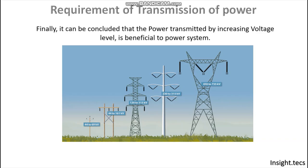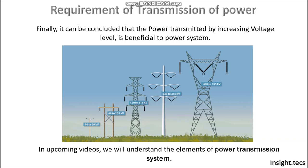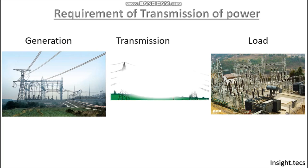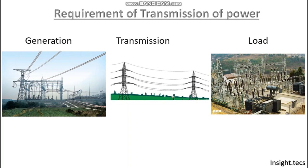Finally, it can be concluded that transmitting power by increasing voltage level is beneficial to the power system. In the upcoming videos, we will understand various elements of the power system. At the generating end, there is a switch yard or a substation, and at the load end, there is another substation. A transmission line is provided between the generating end switch yard and the load end substation. In the next video, we will learn about various elements of the power transmission system.